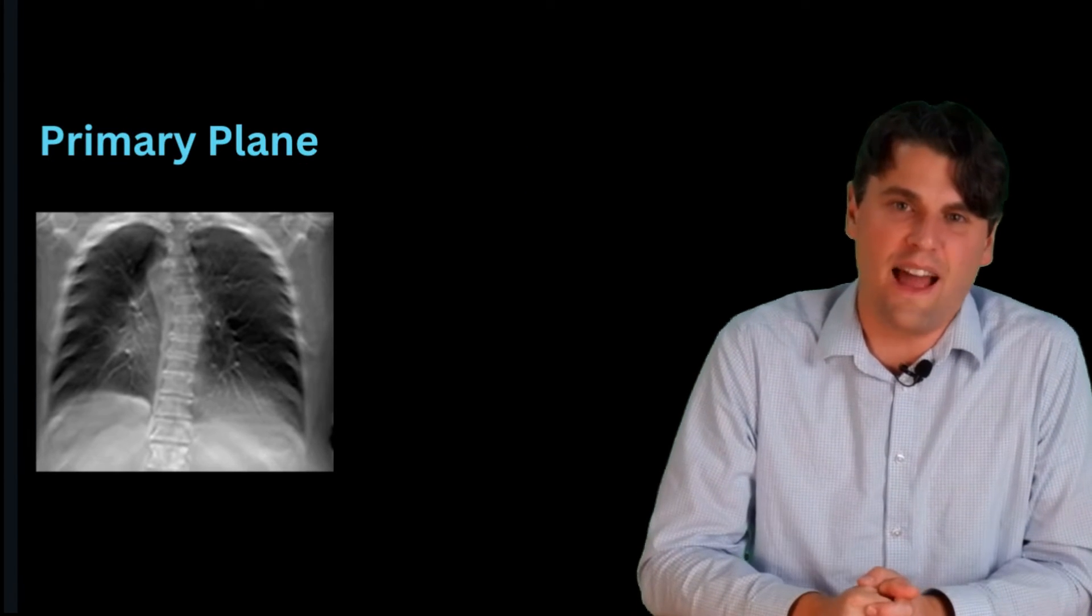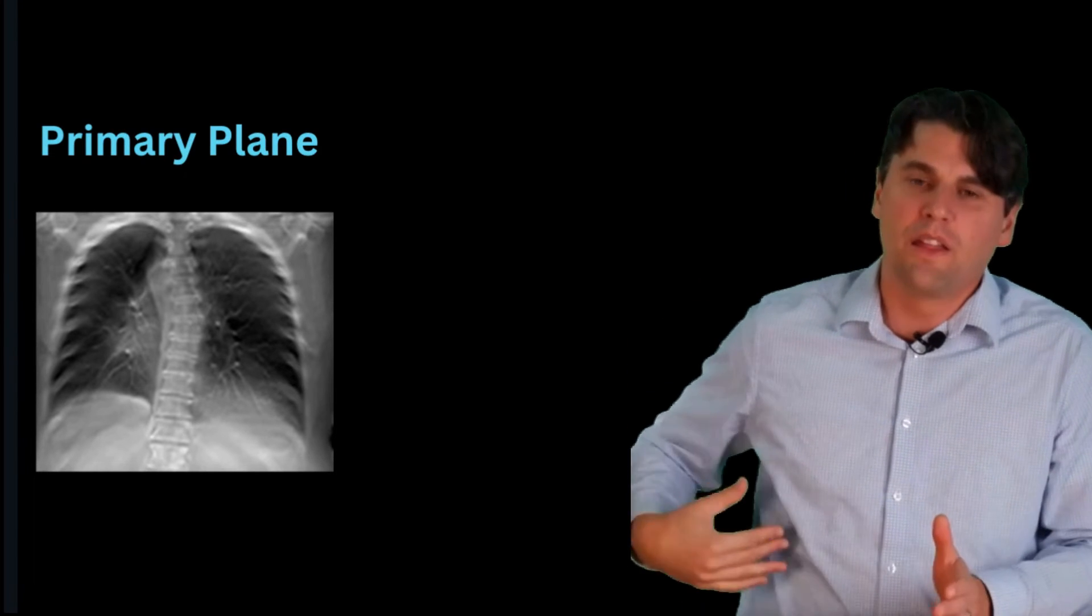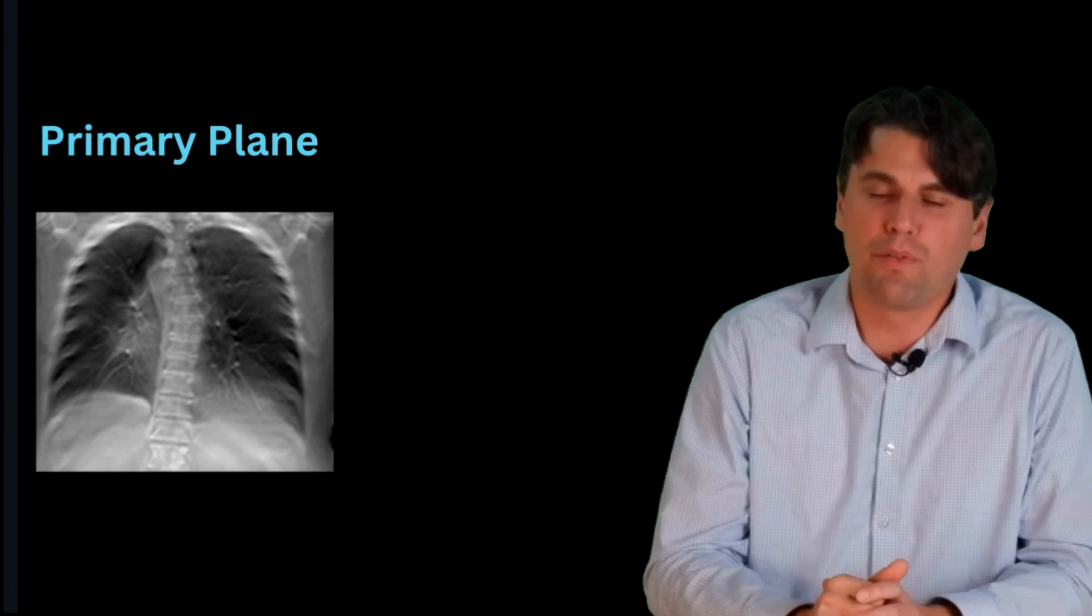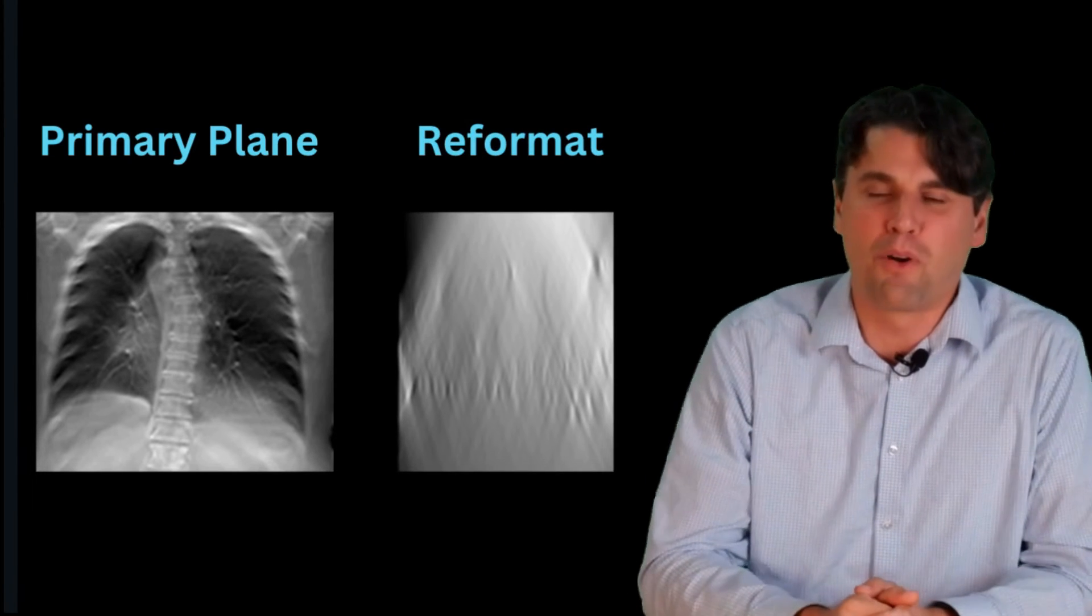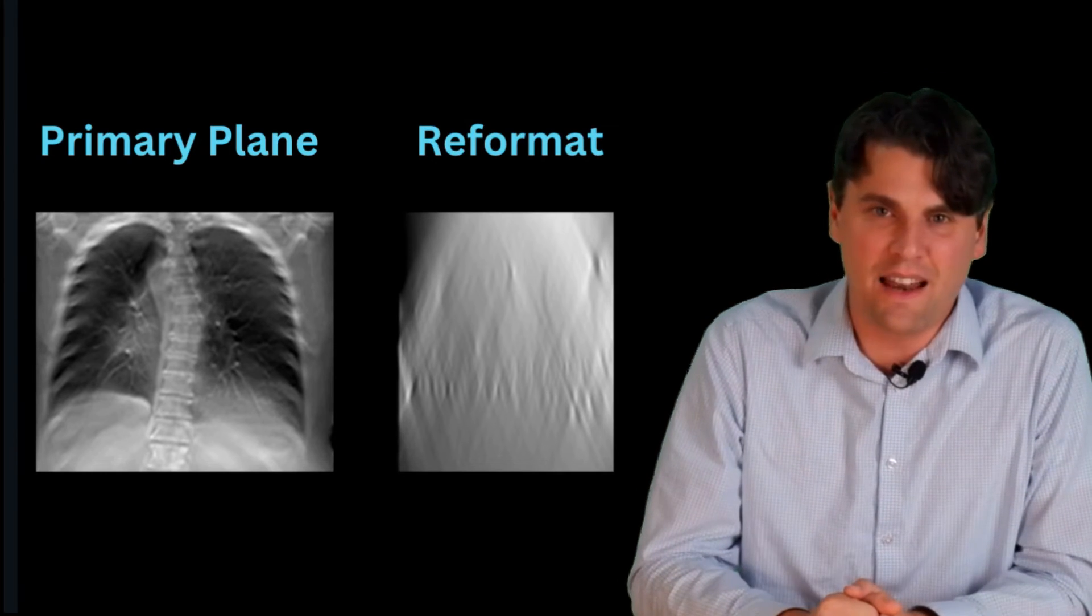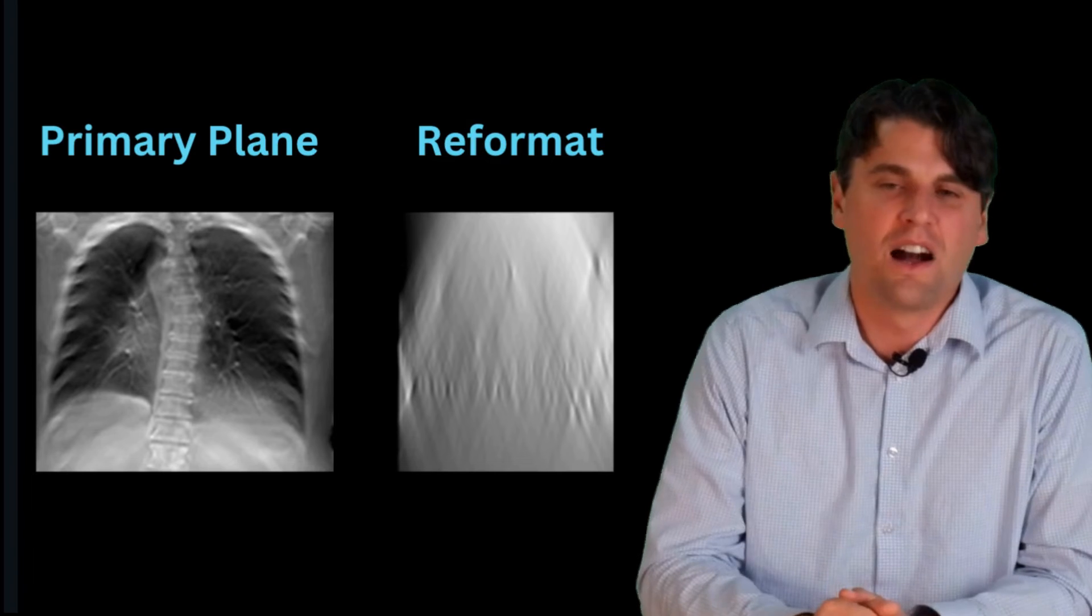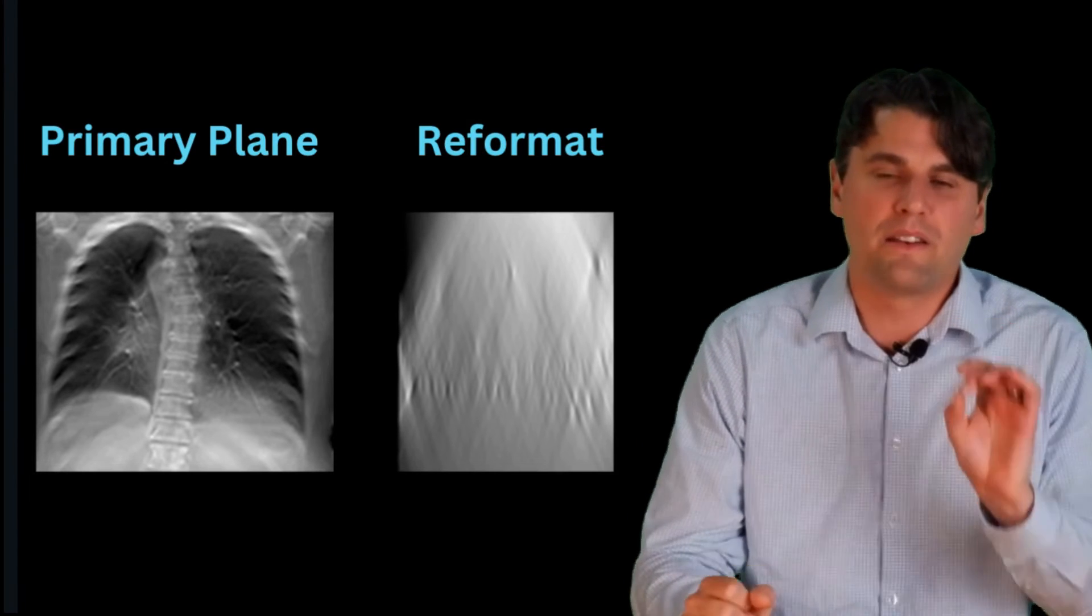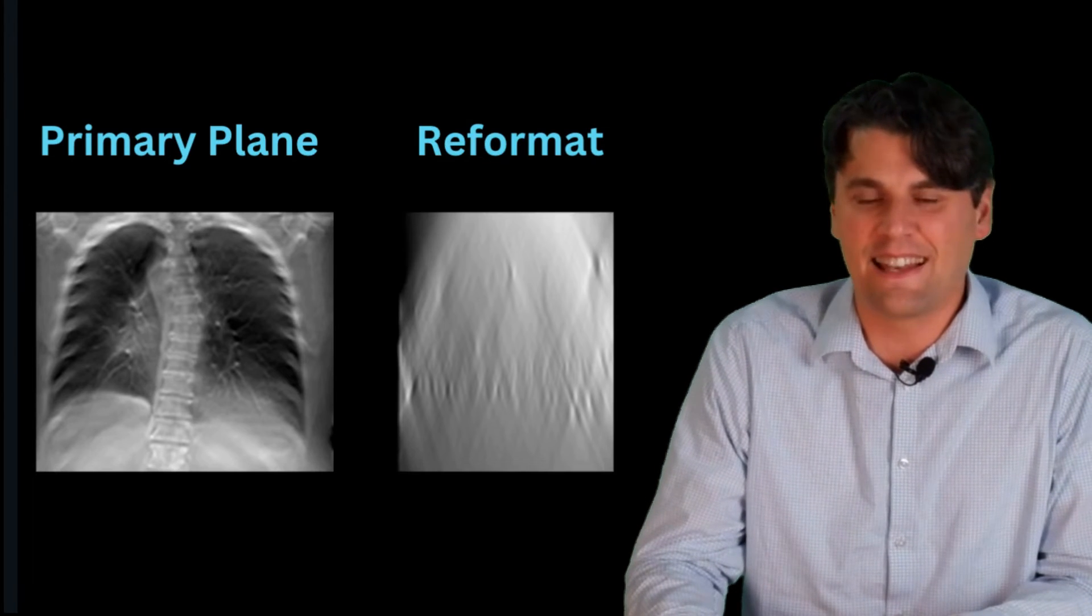So if you look at a tomosynthesis acquisition and you look at the primary acquisition plane, they're going to look like this. Like we showed, they're pretty good, have some improvements over just a 2D projection. But if you look at a reformat, there is going to be serious overlap in the anatomy, such as it's going to be difficult to appreciate the structures. Again, this obviously depends on the acquisition parameters, but they typically will not have the general quality of a CT scan.